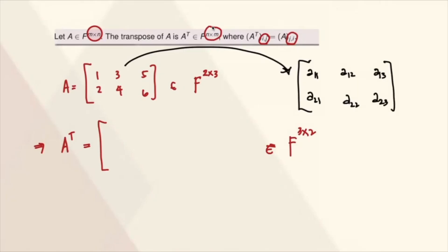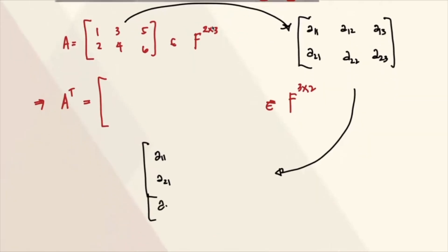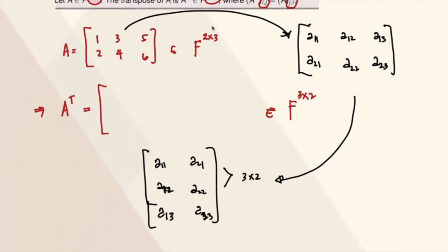So that means your new matrix, which is the transpose, mag-swap lang ang order. So this becomes now A11, A21. Sorry, it should be A11, A12, A13, and I would have A21, A22, and A23. So that means this is now 3 by 2. Which means, ang mangyayari dito, this is now 1, 3, 5, 2, 4, 6.